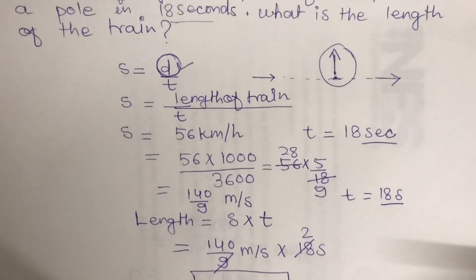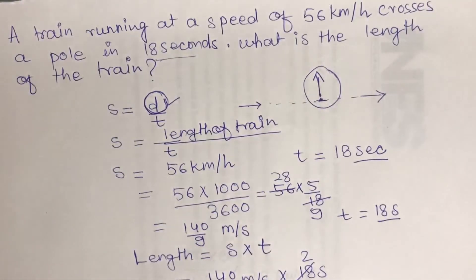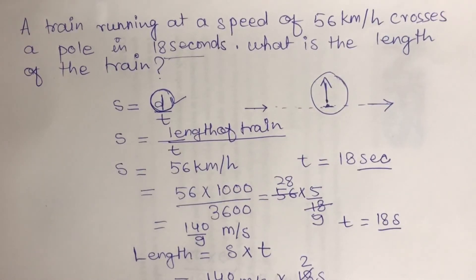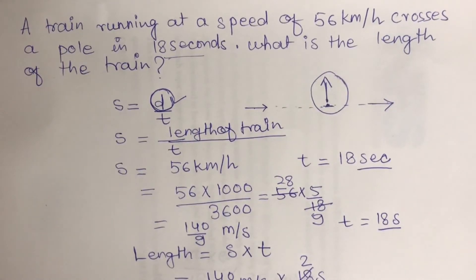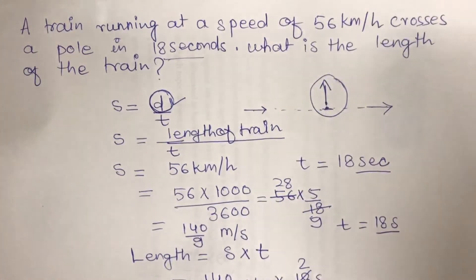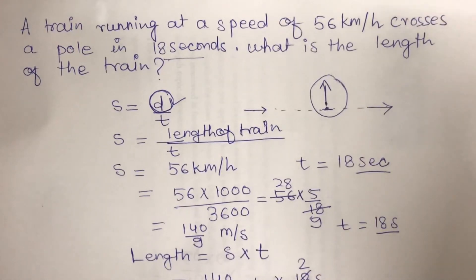I hope you got the concept of how to solve this problem. In the future, if you get any question where a train is crossing a pole, a stationary person, or anything stationary, you can apply this concept and calculate the answer very easily.